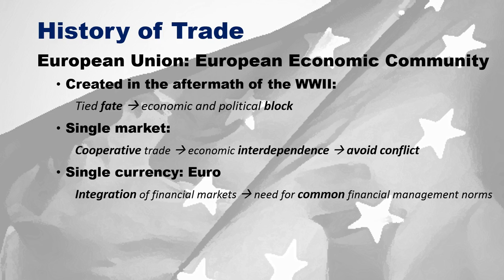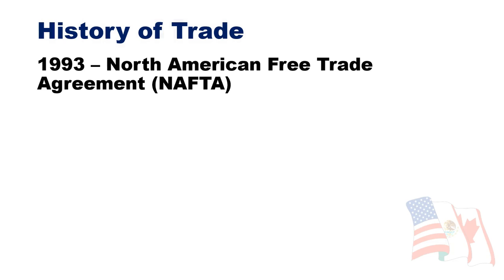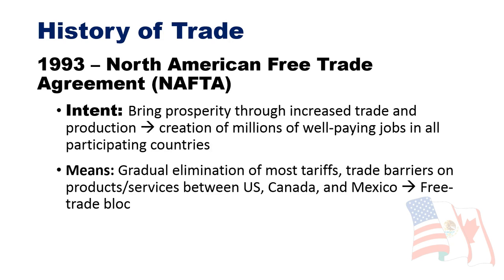The European Union was created after World War Two to tie nations' fates together, create a political block, create a single market for cooperation and interdependence, and ultimately avoid conflict. To do that, they agreed on the euro as a hard currency to integrate financial markets. It has evolved from a purely economic union to a quasi-political one, addressing human rights, climate change, and more. NAFTA's intent was to bring prosperity through increased trade and production and to create millions of well-paying jobs in Canada, Mexico, and the United States by eliminating most tariffs and trade barriers.